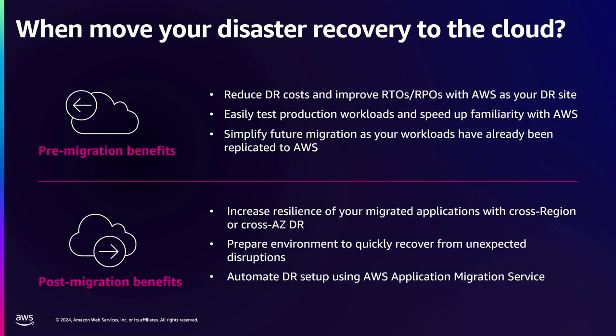For many customers, this also works as a first entry into AWS. If you're not running your production environments in the cloud, you can start thinking about disaster recovery in the cloud. You can keep your production environment wherever it's running and start experimenting with AWS for disaster recovery. When you're testing your DR, you'll get a feel for how EC2 virtual machines work, how VPC works, and networking.